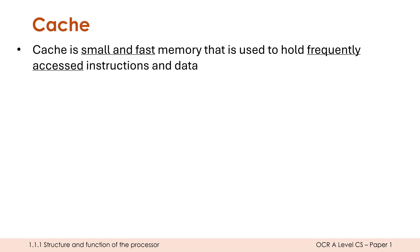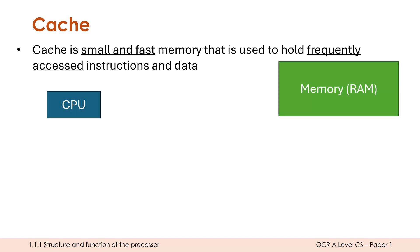Now compared to registers, cache is not small and fast. Cache is much bigger than a register and much slower than a register, but it is a lot smaller and a lot faster than RAM. Currently, our CPU contains registers and we search for instructions and data by going to memory, which is effectively RAM. RAM is massive and is slow, so that fetch stage can take quite a long time.